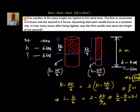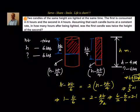After t hours, the first candle height is twice the second candle height. In t hours, height burned in the first candle is ht/6, and in the second is ht/4. Subtracting from total height h gives h − ht/6 and h − ht/4 respectively. Setting h − ht/6 = 2(h − ht/4) and canceling h gives 1 − t/6 = 2 − t/2, which simplifies to t = 3 hours. Thanks for your time and support.